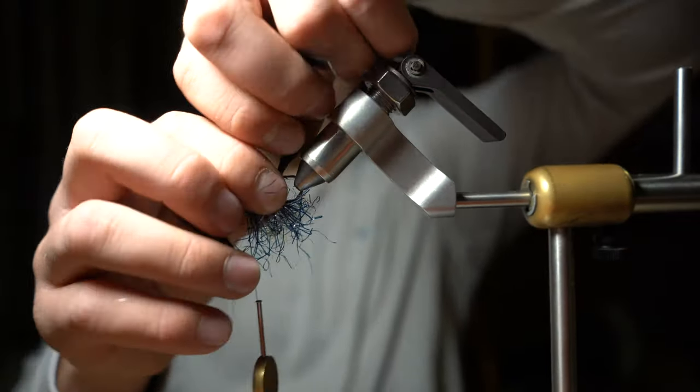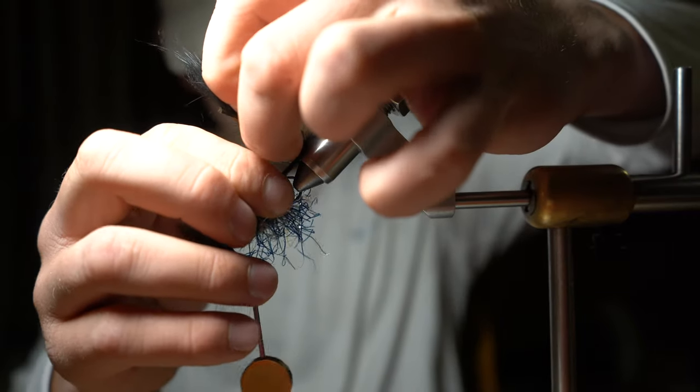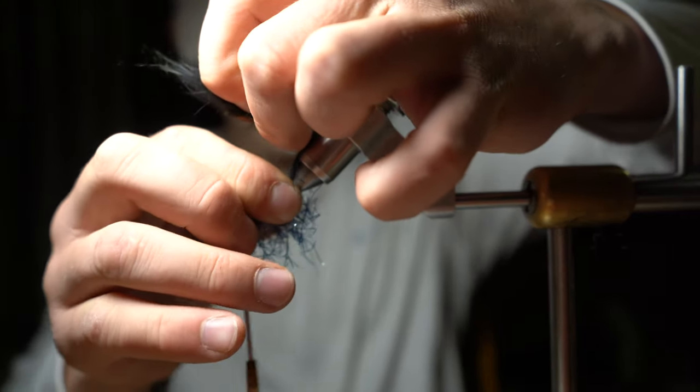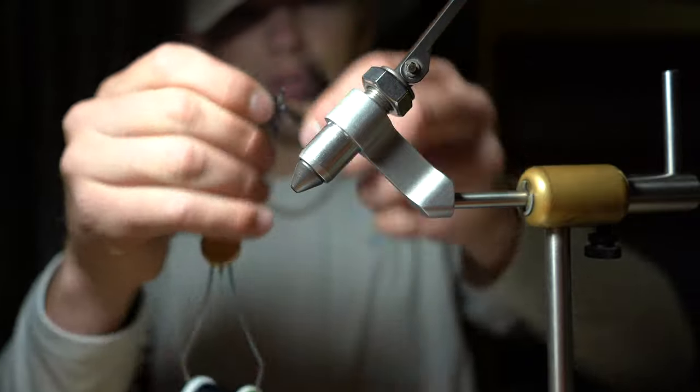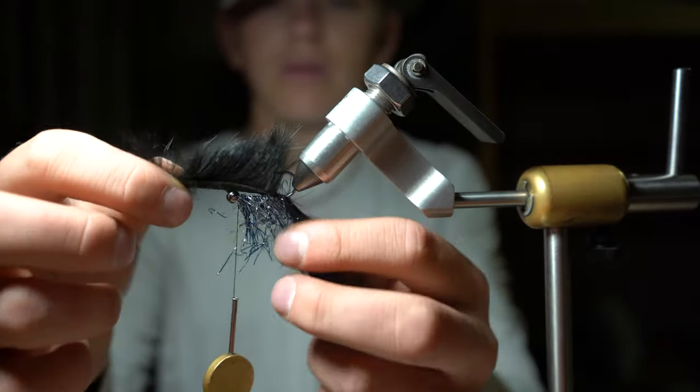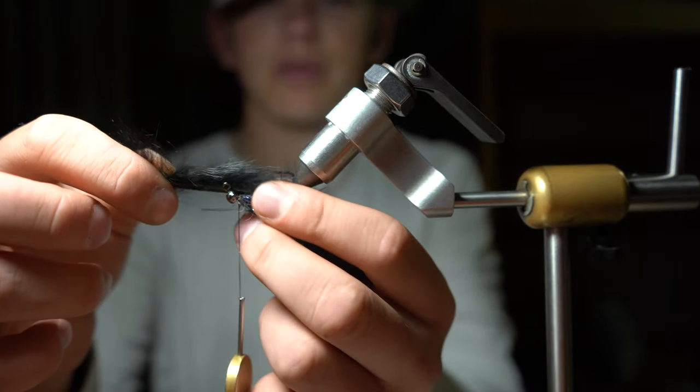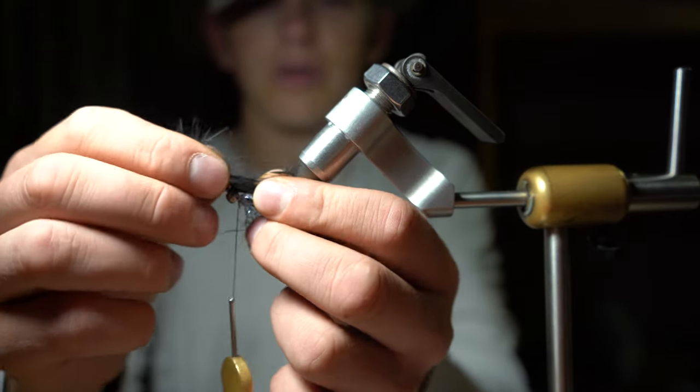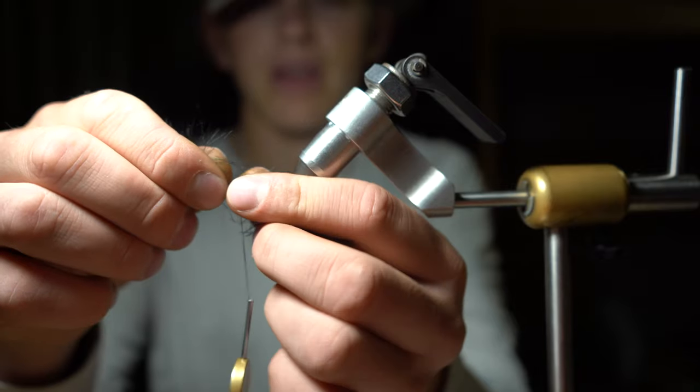You're going to puncture it through the hook like so, push it down, feel these fibers back, and we're going to secure this rabbit strip down at the head. That's a simple leech right there.